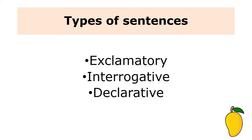We use three types of sentences. We use the exclamatory sentence, which expresses strong feeling and ends with an exclamation mark. We use the interrogative sentence that asks a question and ends with a question mark. We use the declarative sentence that tells something and ends in a period.